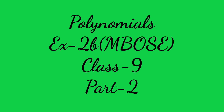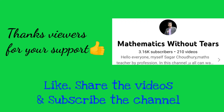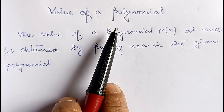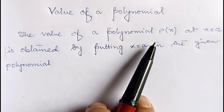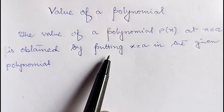Hello viewers. In my previous video on polynomials I gave you the basics of polynomials. In this video I am going to discuss how to find the value of a polynomial for a particular value of the variable, and how to find the zeros of a polynomial. The value of a polynomial p(x) at x equal to a is obtained by putting x equal to a in the given polynomial.